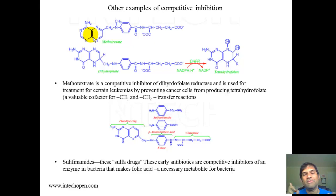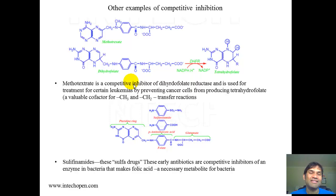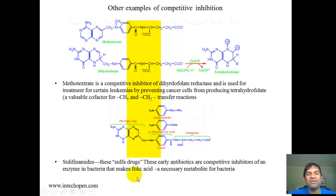A problem with methotrexate is that it also attacks normal cells besides cancer cells. The rationale is that cancer cells proliferate more rapidly, so the drug preferentially targets them, though normally replicating cells are unfortunate bystanders. Sulfonamides are a class of antibiotics — the sulfur drugs — that are competitive inhibitors of the bacterial pathway to make folic acid, again showing structural similarity to the natural substrate.